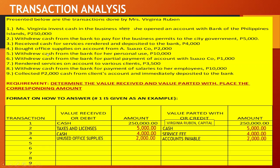Transaction number five: referring back to the business entity concept, wherein the business is separate and distinct from its owner. This transaction reflects the owner's drawings. The appropriate account title is Virginia Drawing (or Virginia Rubin Drawing), amount $10,000, and we credit Cash, $10,000.